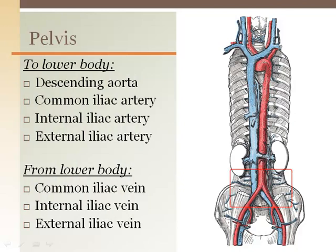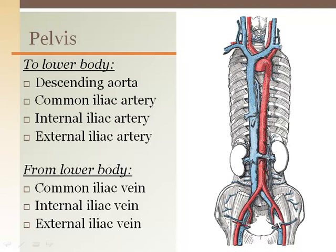The descending aorta ends at the bifurcation to the right and left common iliac arteries, just at the rim of the pelvis at hip level. The common iliac arteries are about five inches long, then split into the internal iliac arteries serving the pelvic organs and the external iliac arteries bringing blood out to the legs. Blood returning from the legs enters the torso via the external iliac vein, and the internal iliac vein drains blood from the pelvis.